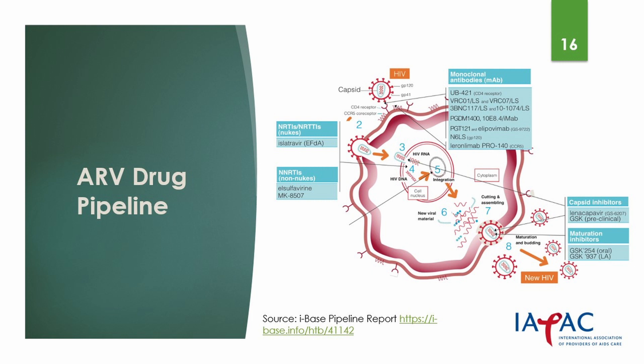Clinical trials involving islatravir were halted in late November 2021 after decreases in white blood cells were reported in certain patients. Trials of islatravir for treatment of HIV infection have now been restarted at a lower dose. However, trials of islatravir for PrEP still remain on hold.